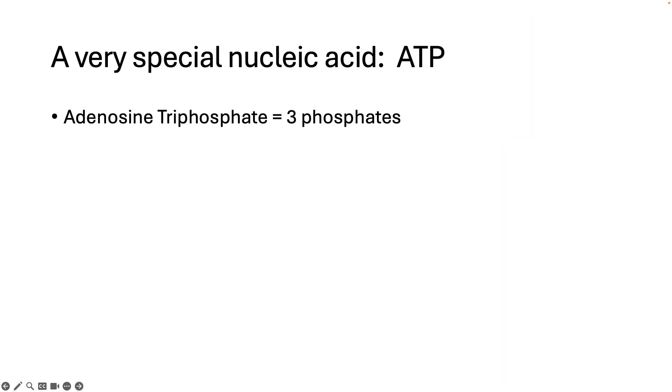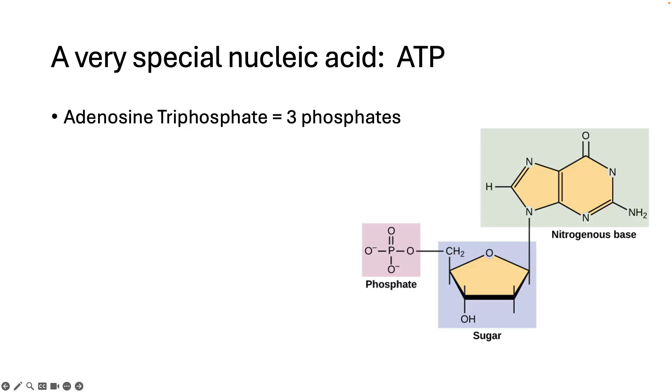ATP is a special kind of nucleic acid in that it isn't a repeating subunit that forms a macromolecule. It exists all by itself. The official name is adenosine triphosphate, and all that means is that it has three phosphates. That's why it says tri, not just one.